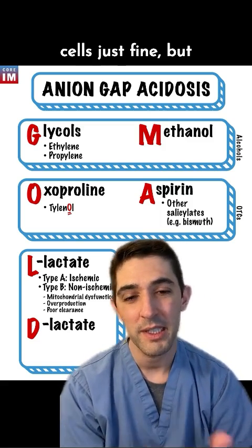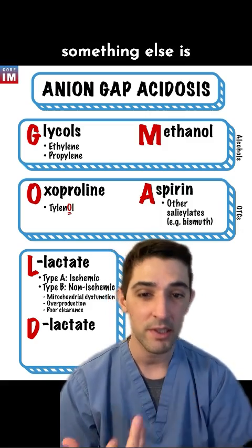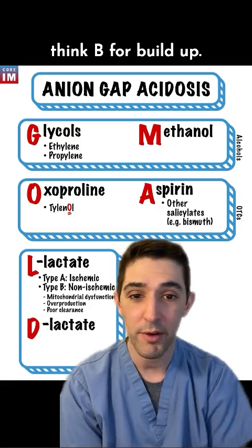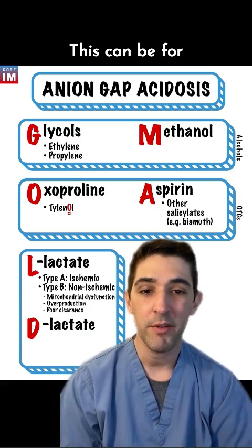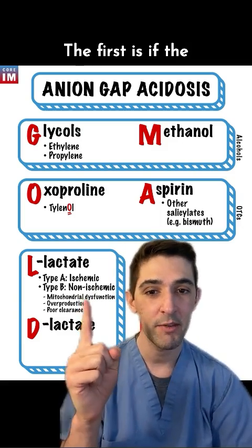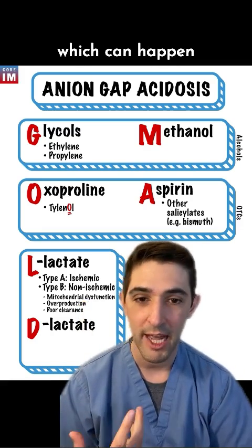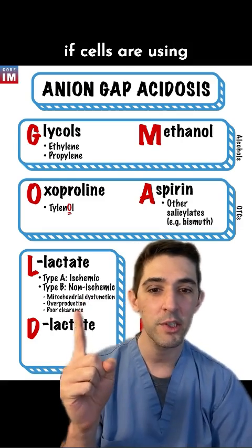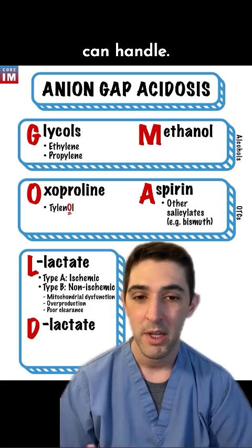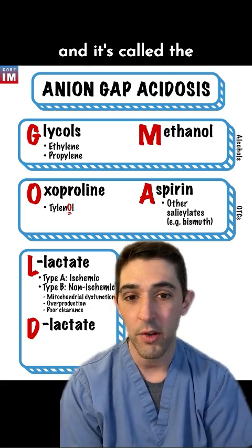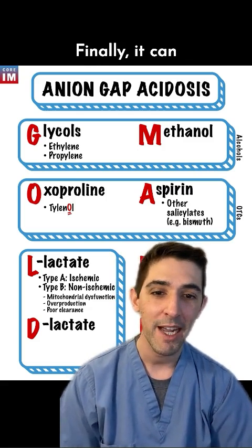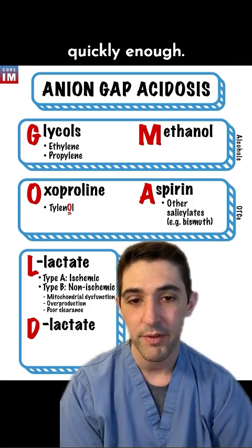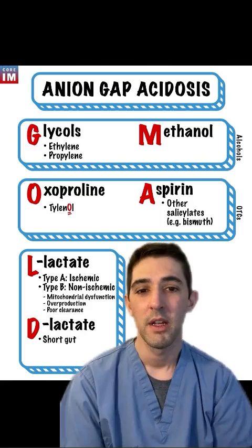What if oxygen is getting to cells just fine, but something else is causing lactate to build up? That's type B lactic acidosis — think B for build-up. This can occur for three major reasons: first, if the mitochondria just aren't working, which can happen from certain medications or toxins; second, if cells are using energy faster than mitochondria can handle, as seen in certain cancers — called the Warburg effect; and finally, if lactate is being made at a normal rate but not being cleared quickly enough, which can occur in cirrhosis.